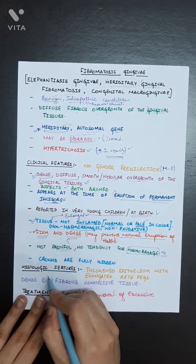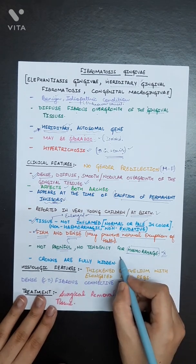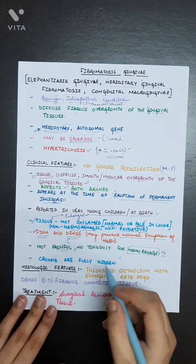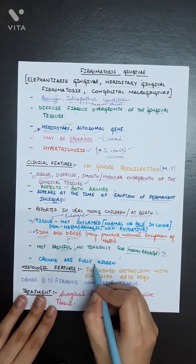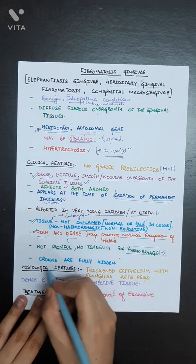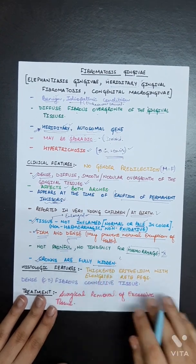Sometimes the tooth is properly erupted in the oral cavity, but sometimes the crowns are fully covered with these gingival overgrowths, so the crowns are fully hidden sometimes.